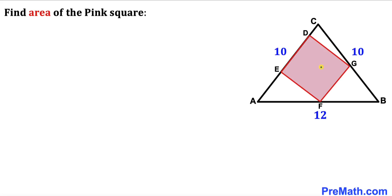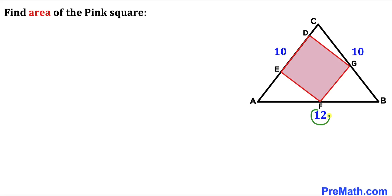Welcome to pre-math. In this video we have a pink square DEFG fully inscribed in an isosceles triangle ABC, such that side length AC is 10 units, side length BC is 10 units as well, and side length AB is 12 units. Our task is to calculate the area of this pink square DEFG.